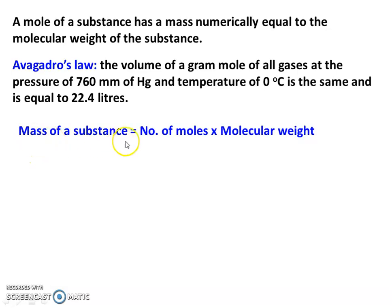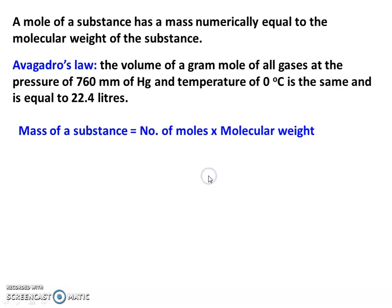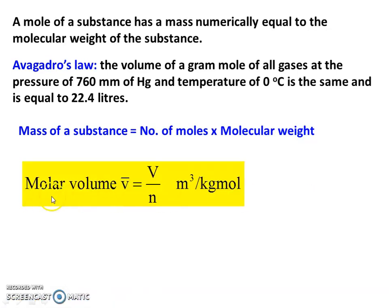We define mass of the substance equal to number of moles into molecular weight: M equal to N into capital M, where N is the number of moles and capital M is the molecular weight. Molar volume V-bar equals volume divided by number of moles, in units of meter cube per kilogram mole. The molar volume equals total volume of the gas divided by the number of moles.